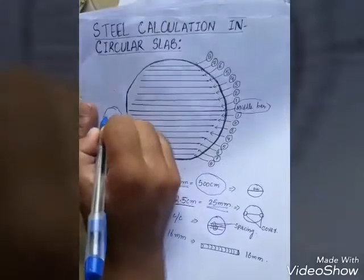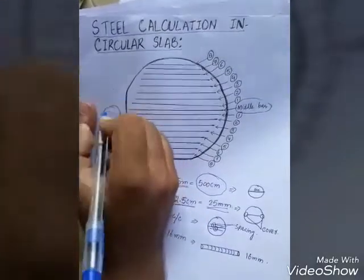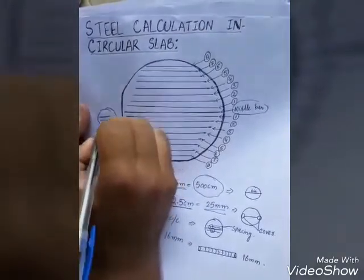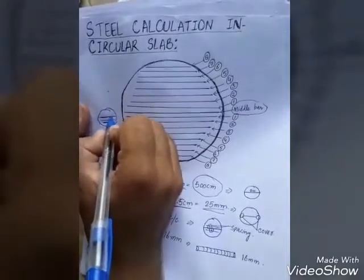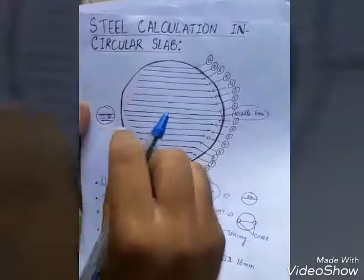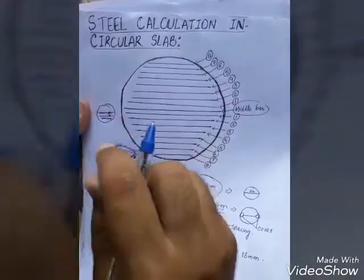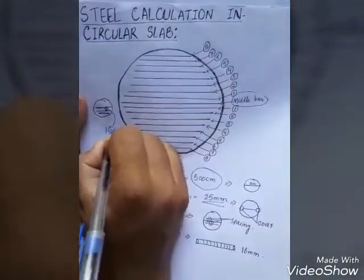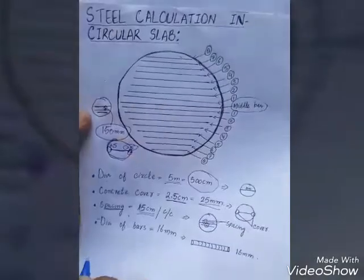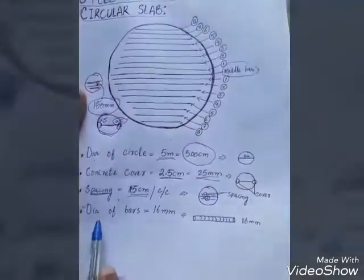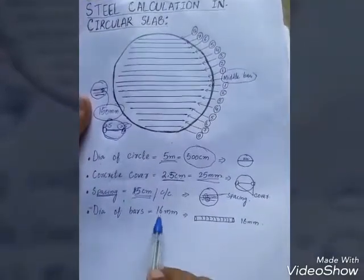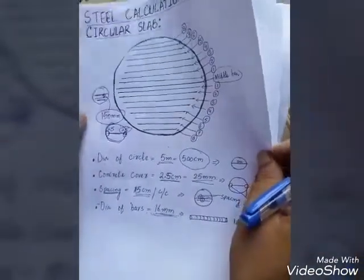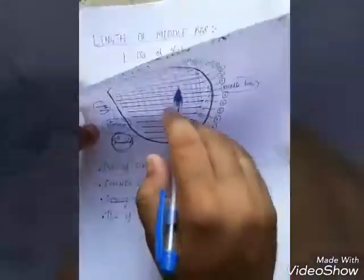If this is my first bar and this is my second bar and this is my third bar, the spacing from one bar to the next bar is 150 mm. The diameter of the bar is given as 16 mm.